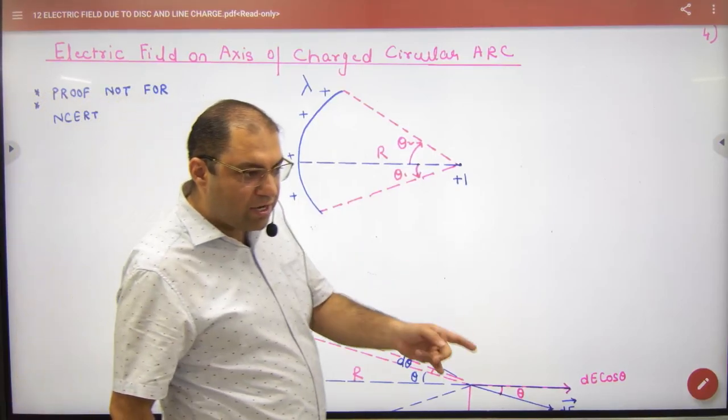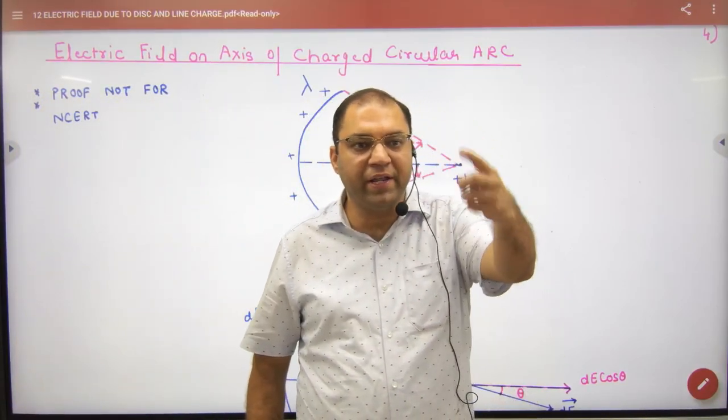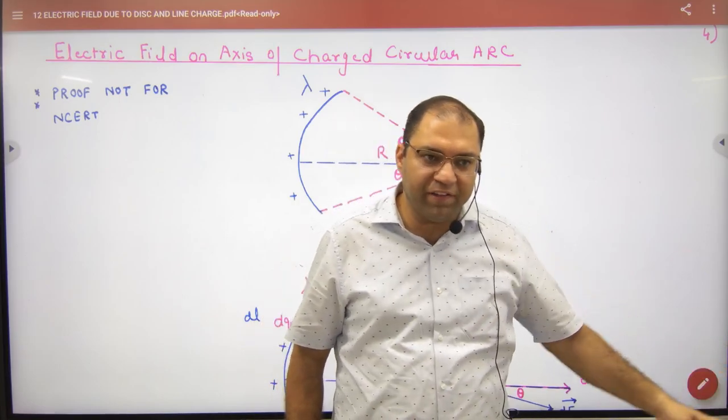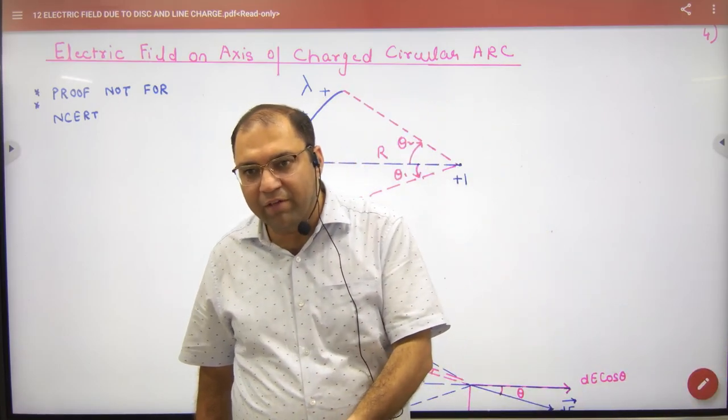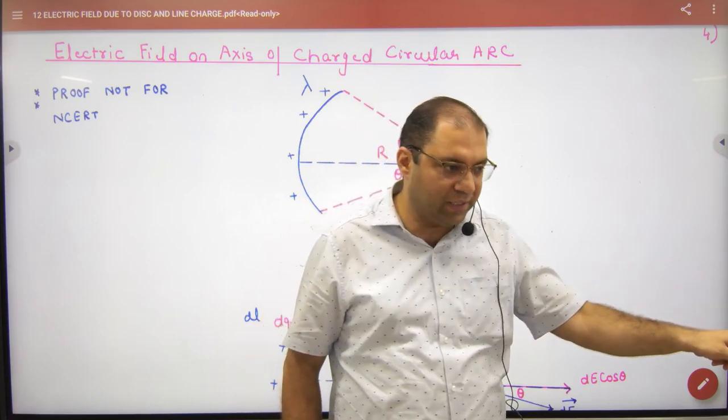Now we have done E on the point charge, then we have done E on the ring, then we have done E on the disk.